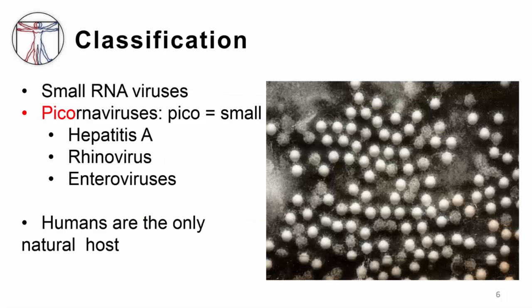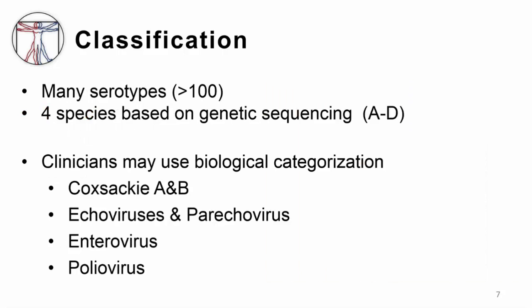Enteroviruses are small RNA viruses that belong to the picornavirus family of viruses. The word picornavirus is derived from the word pico, meaning small. Other viruses in this family include hepatitis A and rhinovirus. Humans are the only natural hosts for enterovirus, and this factor has implications for transmission and control. There are more than 100 types of enterovirus with four main species grouped by genetic sequences.